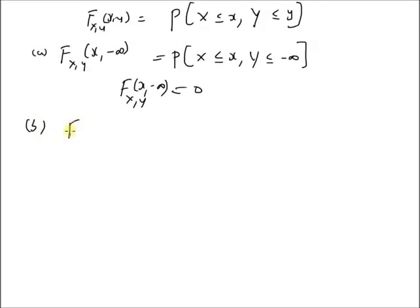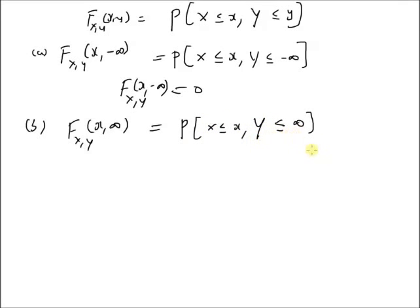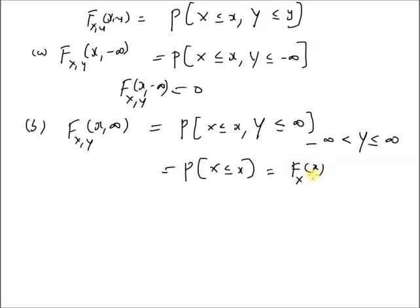Now we want to look at the other extreme, that is the CDF value at x comma plus infinity. This is equal to the probability that X is less than or equal to small x and Y is less than or equal to plus infinity. This definition basically says that the value of Y can be anything between minus infinity and plus infinity, meaning we are talking about the sample space of Y. So this event is the same as the probability that X is less than or equal to small x. Therefore, this equals the marginal CDF, F_x of x.